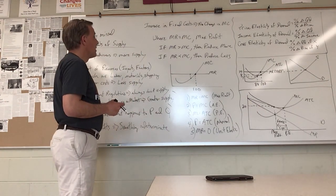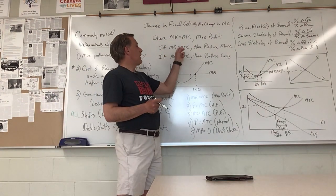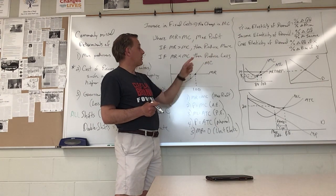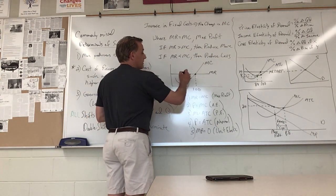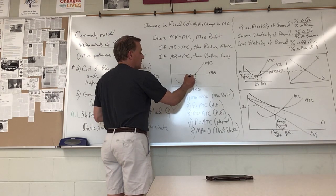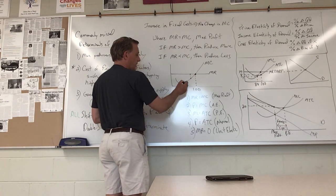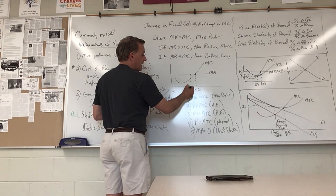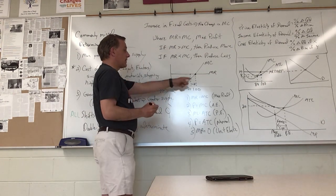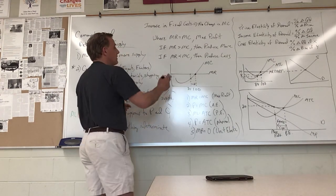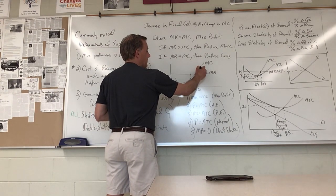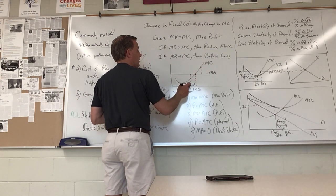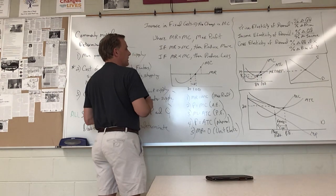If there's an increase in variable cost, that will increase marginal cost and their intersection will be earlier, leading to a decrease in the output by the firm. Where MR equals MC is max profit. If MR is greater than MC, then produce more. If MR is less than MC, that means we should decrease our quantity to maximize profit.